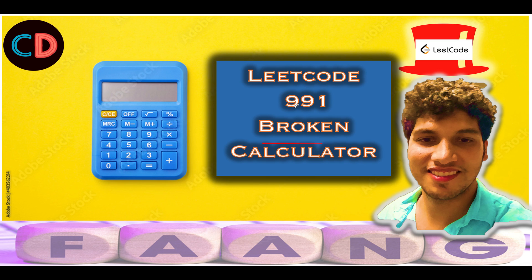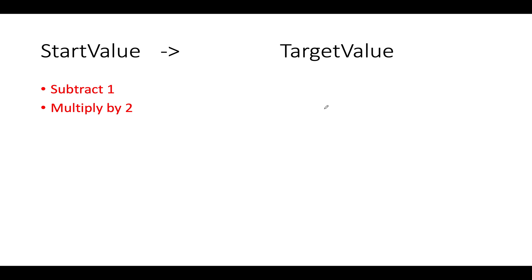Broken Calculator LeetCode 991. Let's restate the rules and the understanding that we developed from the question. We are given the start value. We need to reach the target value. And how can we do that? We need to perform operations on the start value. Either you can subtract 1 or you multiply it with 2. Very simple to understand.